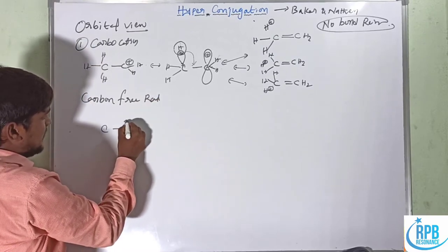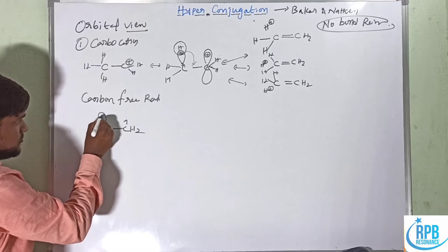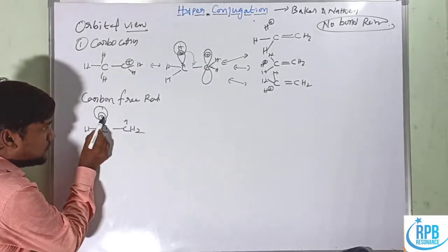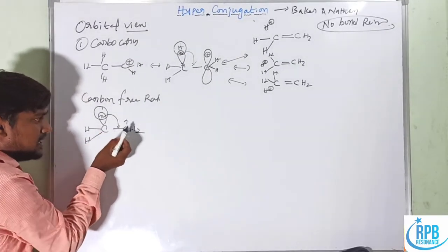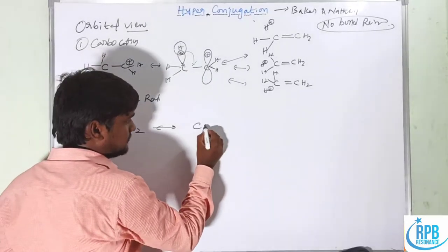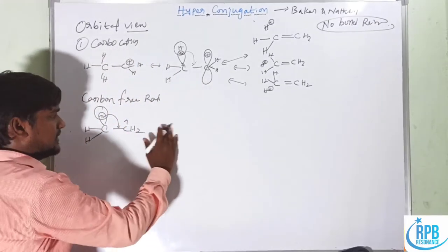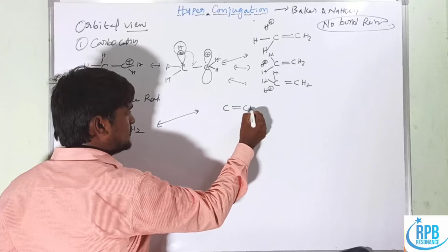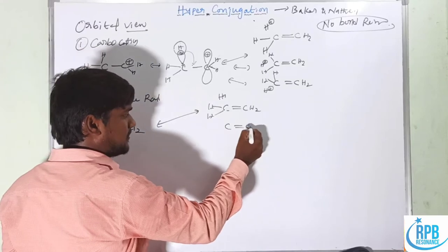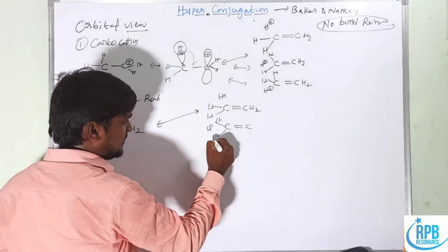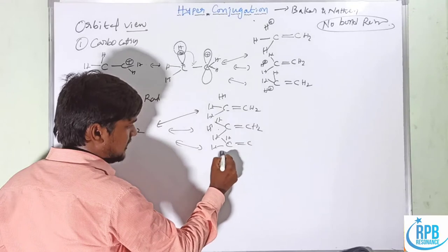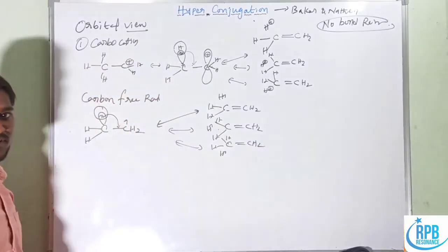For the orbital view of carbon free radical: the carbon has one unpaired electron. One of the bonding electrons from the adjacent C–H bond shifts toward the radical carbon, forming a new double bond. This gives three types of hyperconjugated structures with H radical in different positions, similar to the carbocation case.